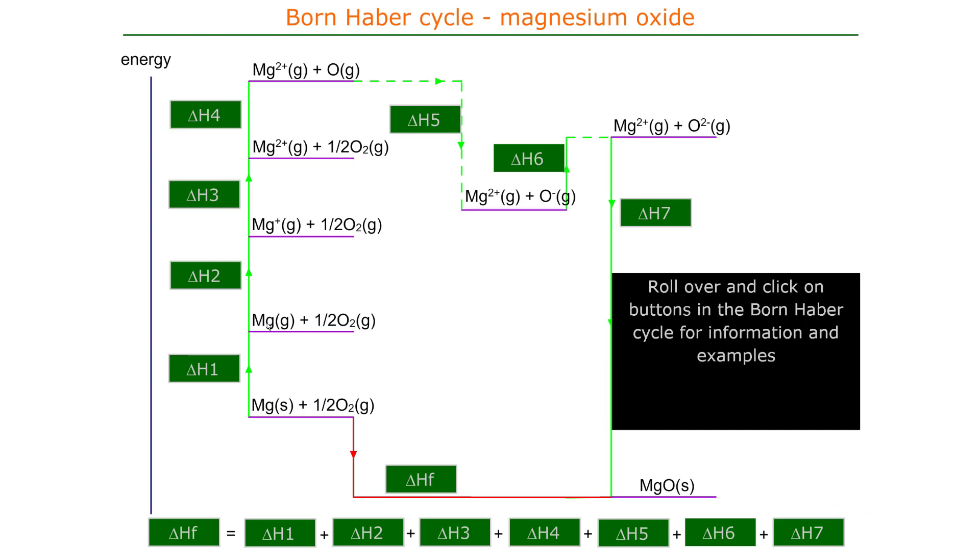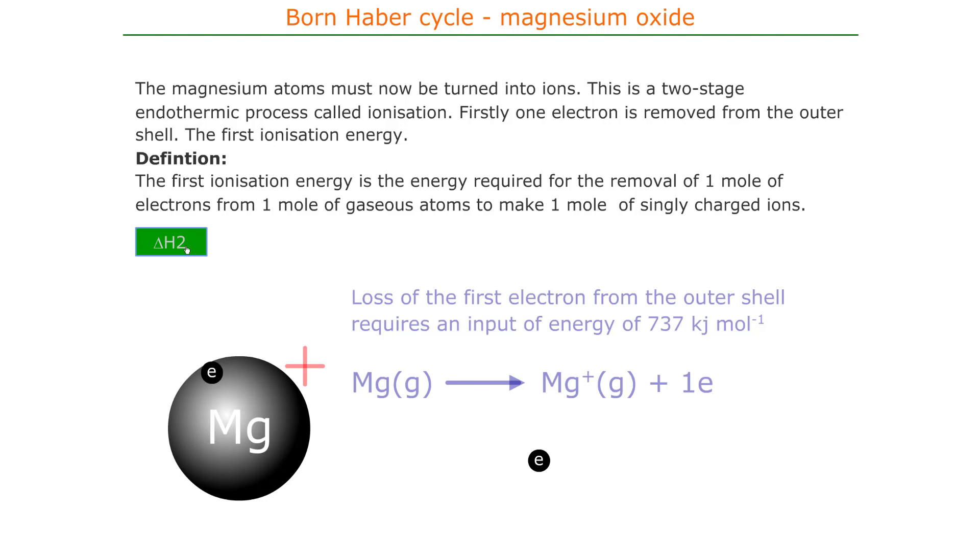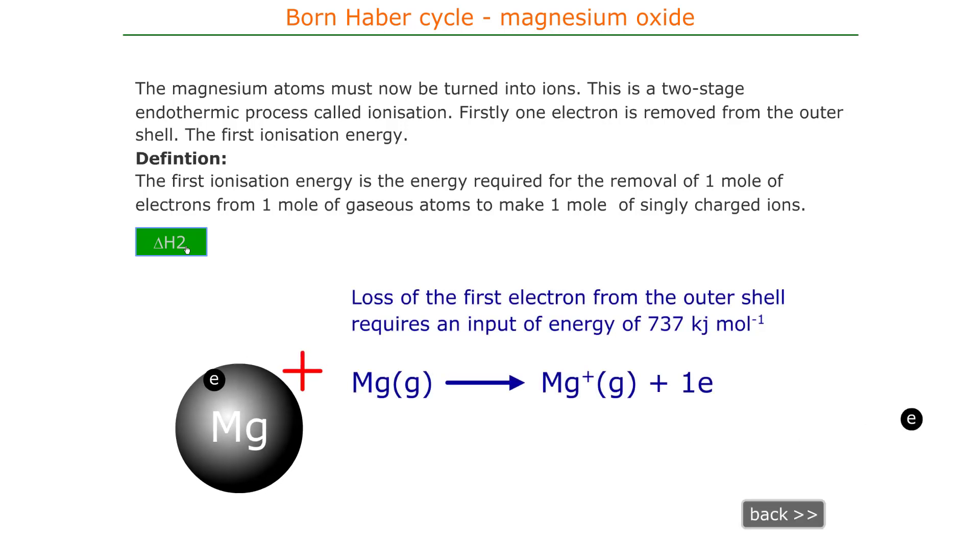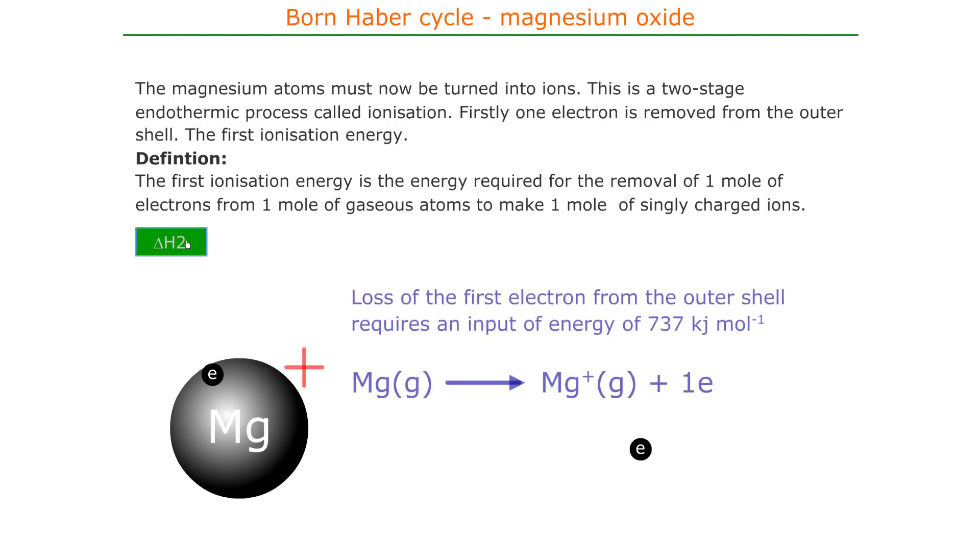We next need to ionize the magnesium. Magnesium has two ionization energies. It needs to lose two electrons per atom or two moles of electrons per mole of atoms. It needs to lose one electron first to make magnesium plus, then one electron to make magnesium 2 plus.